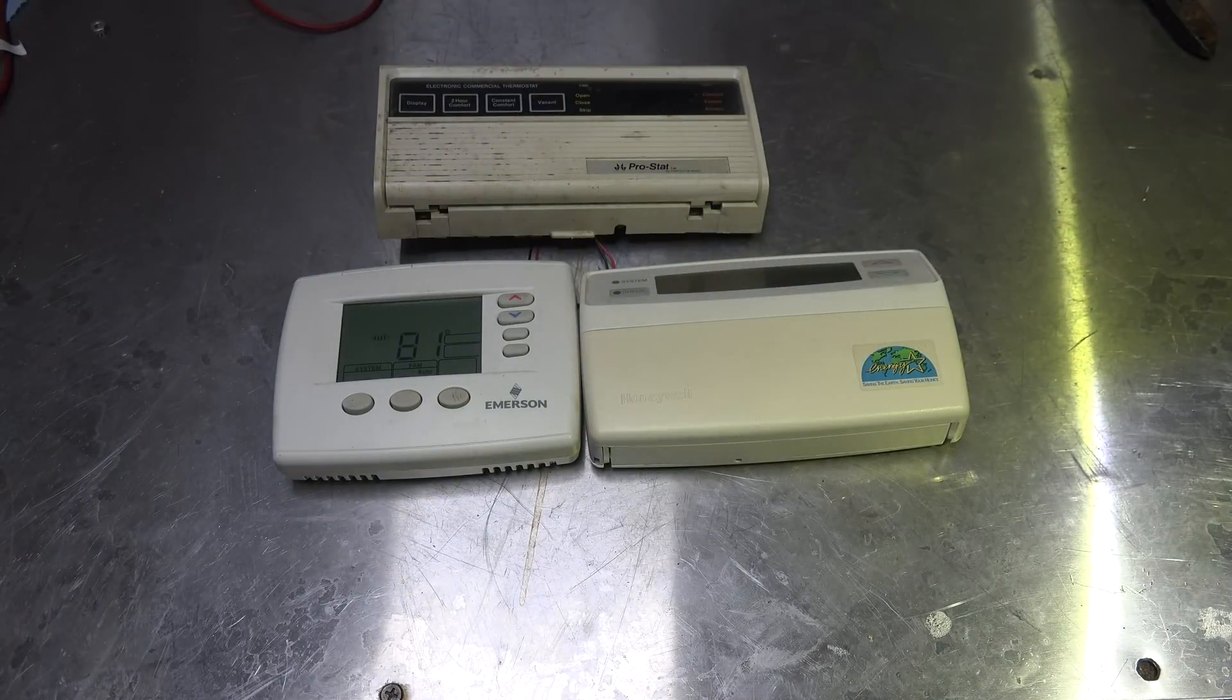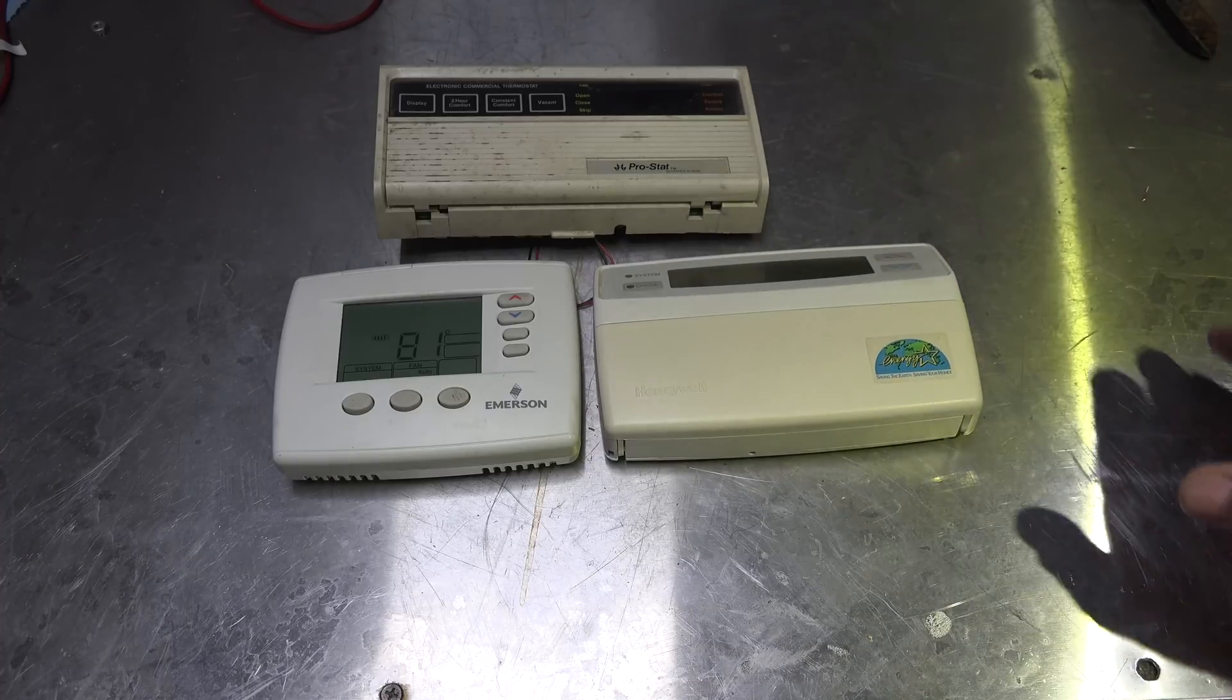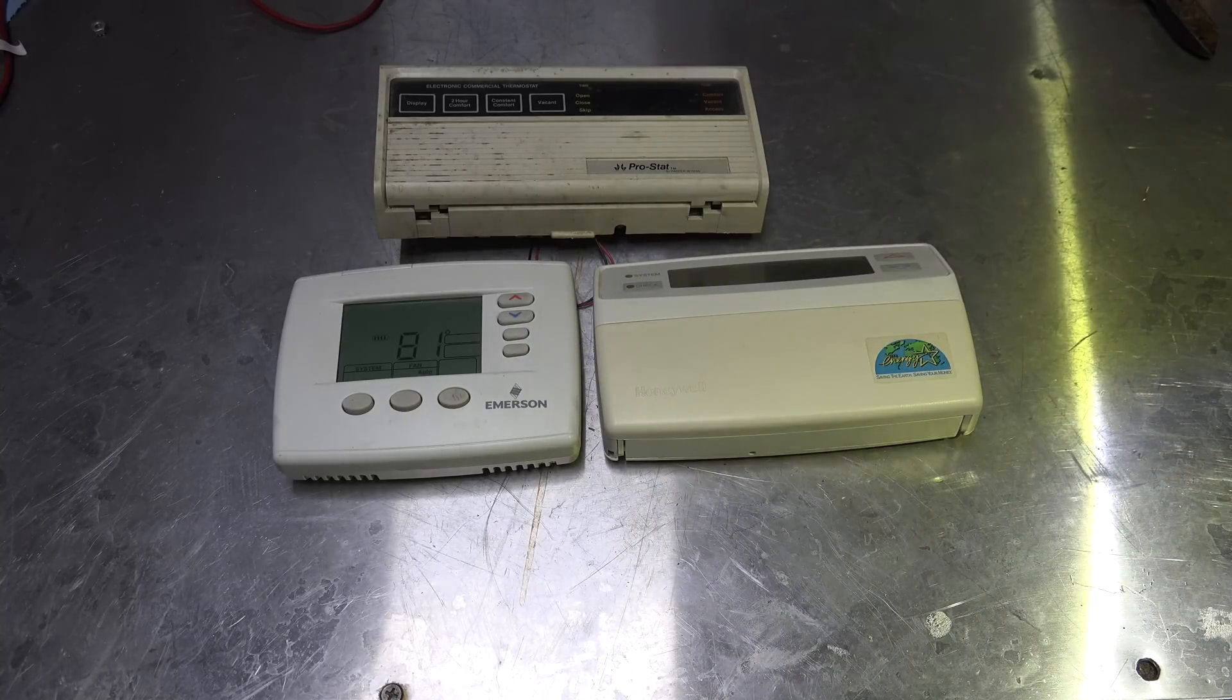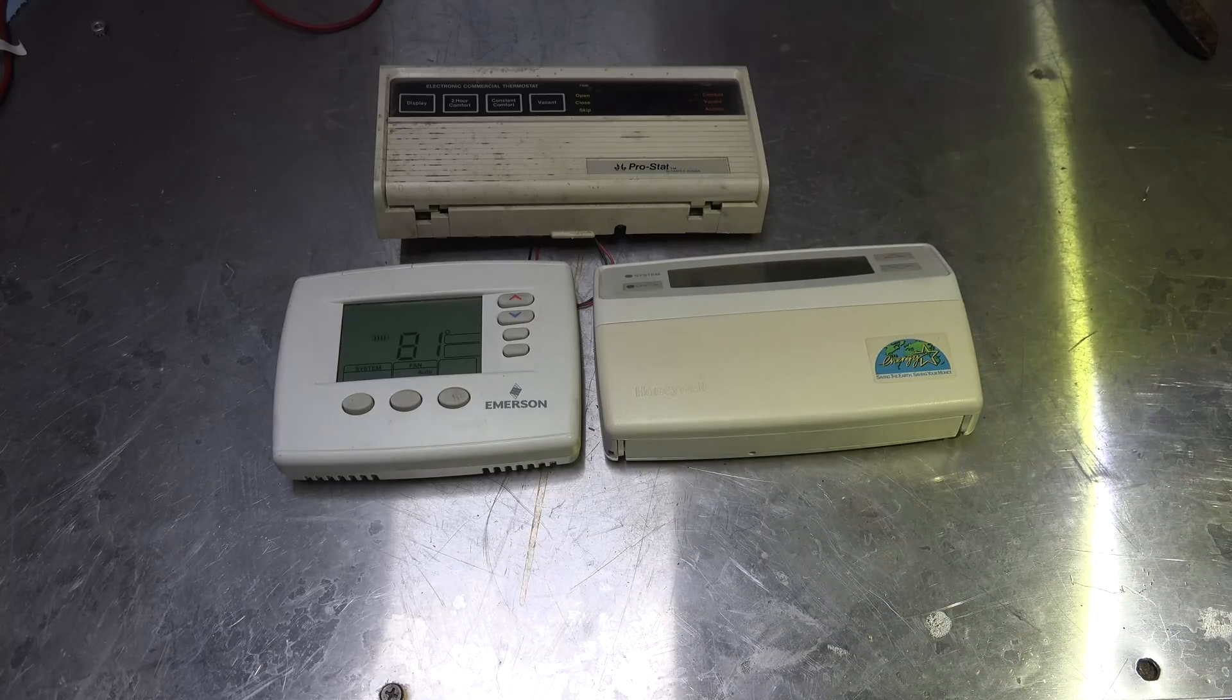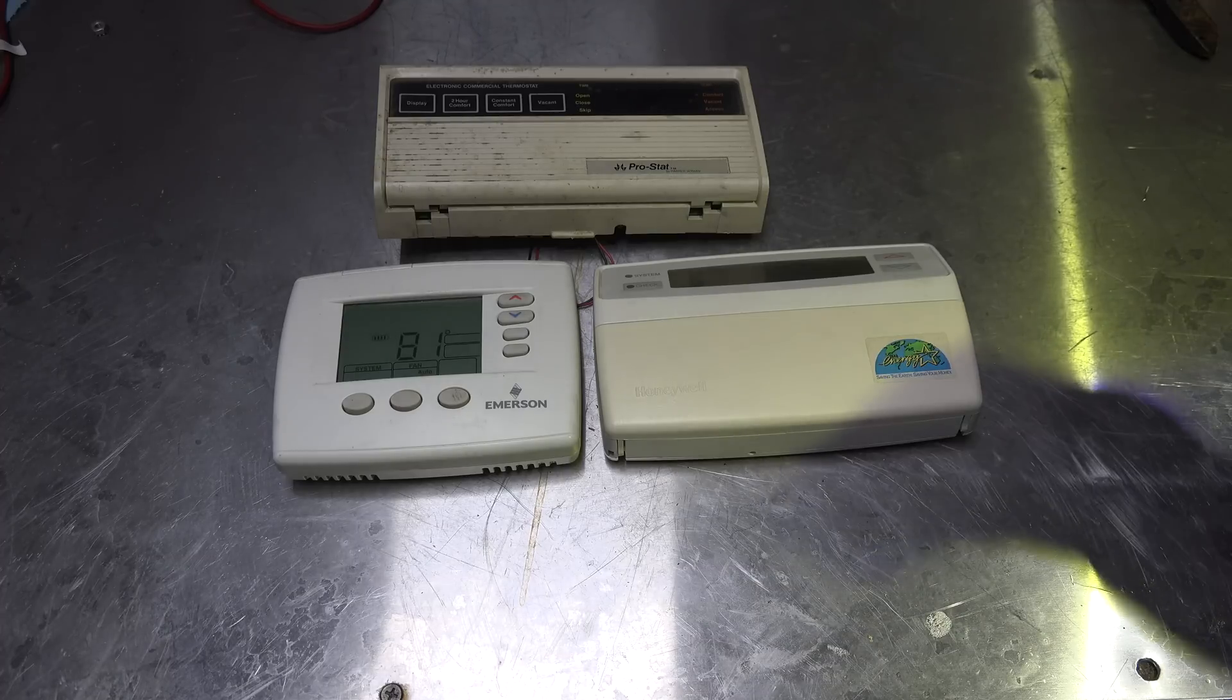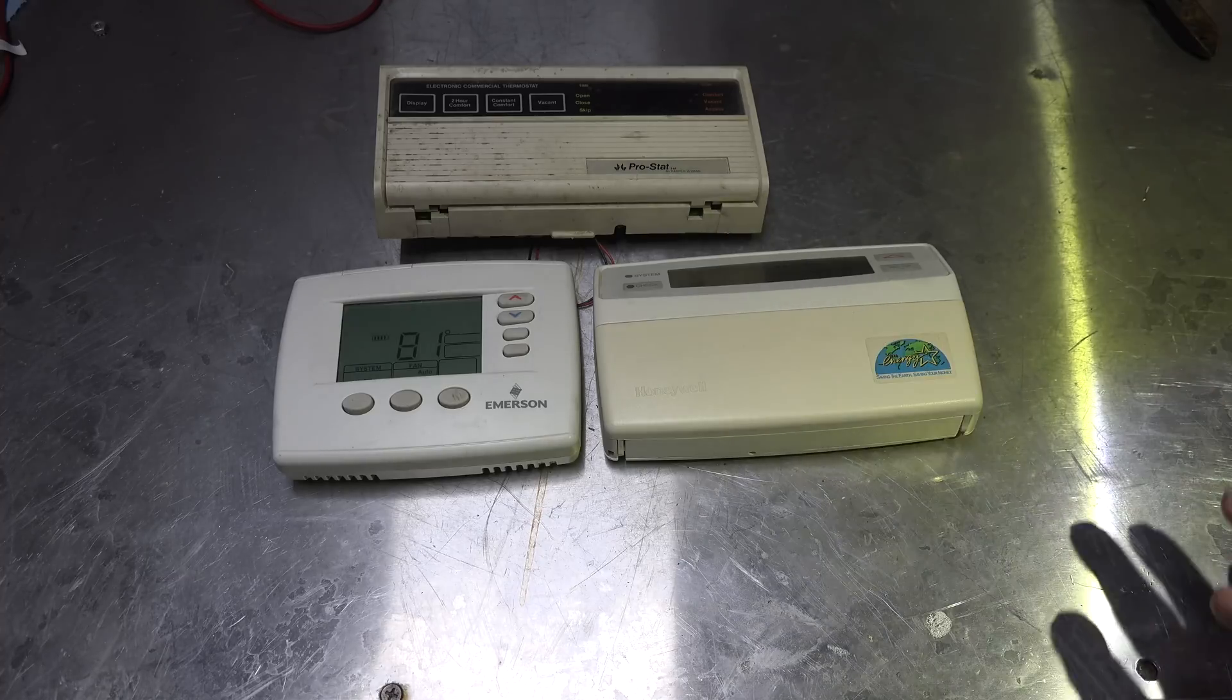What we're looking at on these thermostats is how they sense temperature. Where is the temperature sensor? What is it? How does it work? Well, these are all thermistor type thermostats. That means they use a variable resistor, which means as the temperature goes up and temperature goes down, the resistor changes its resistance. That's how these things work.